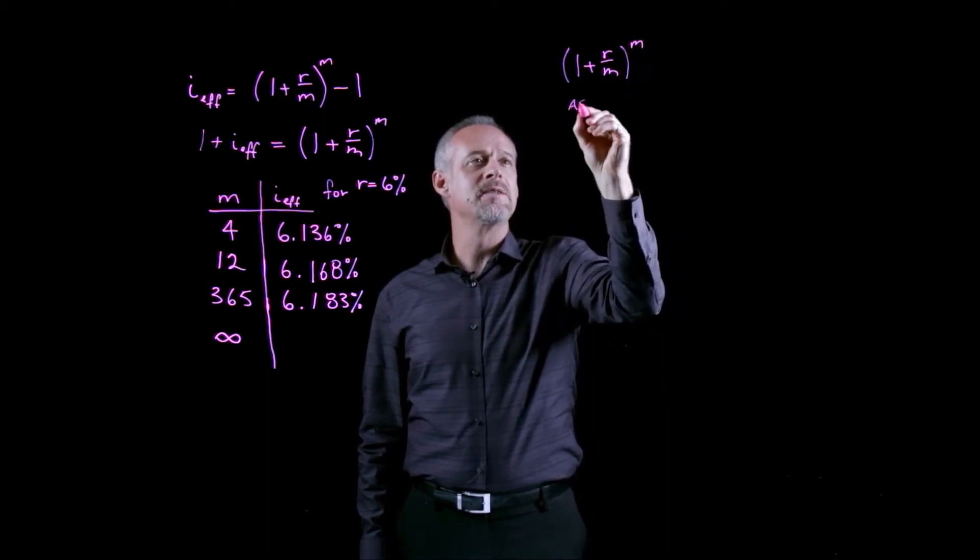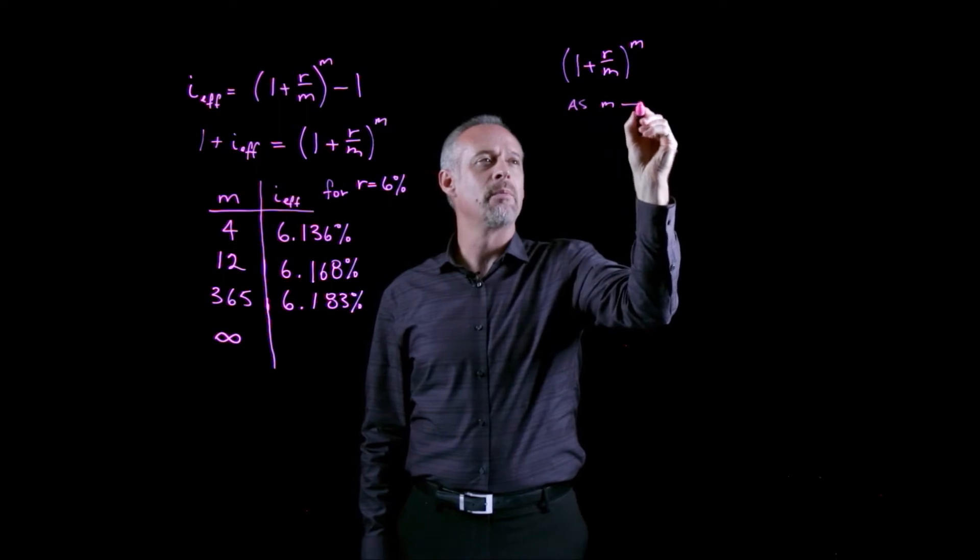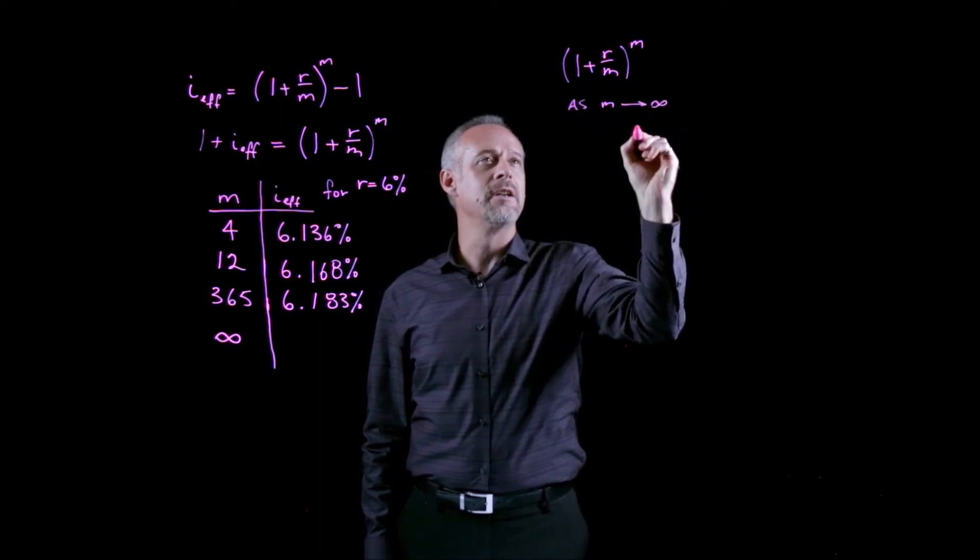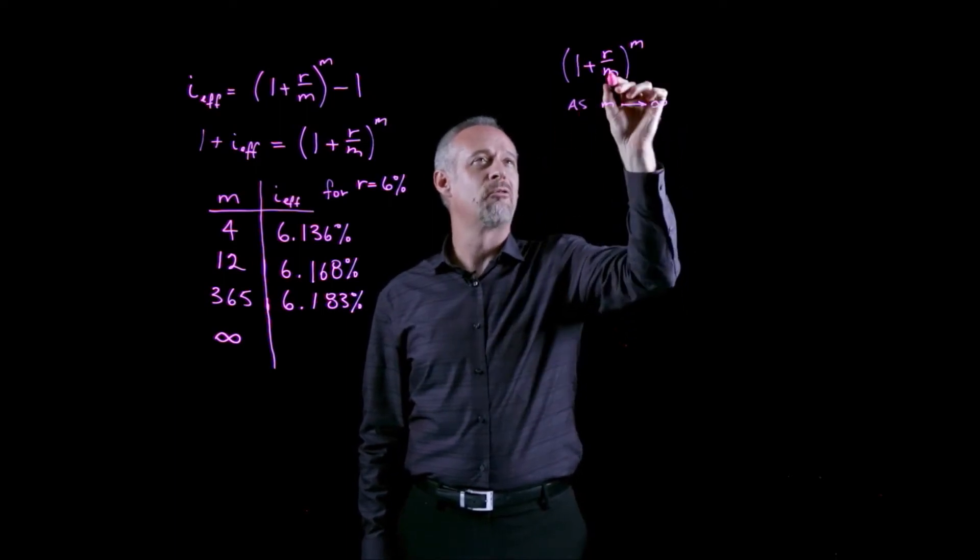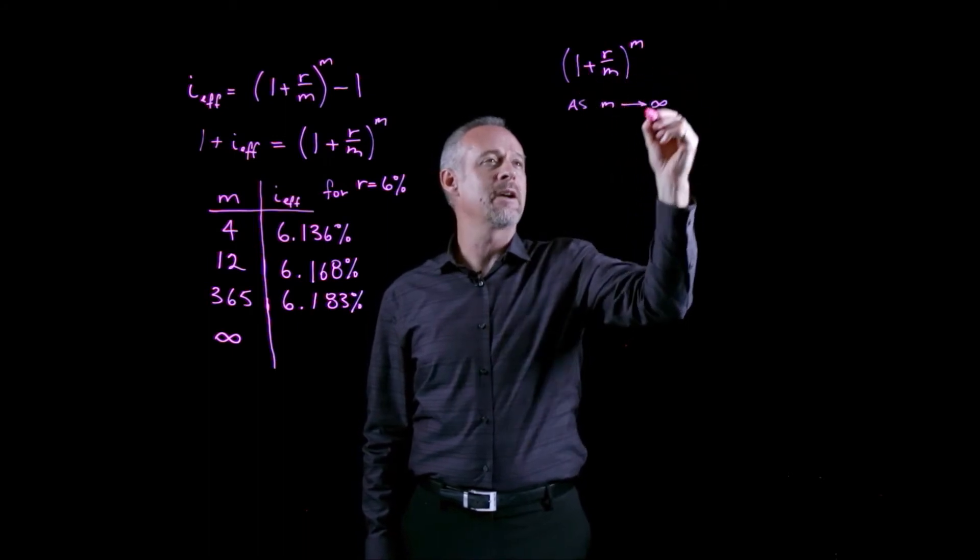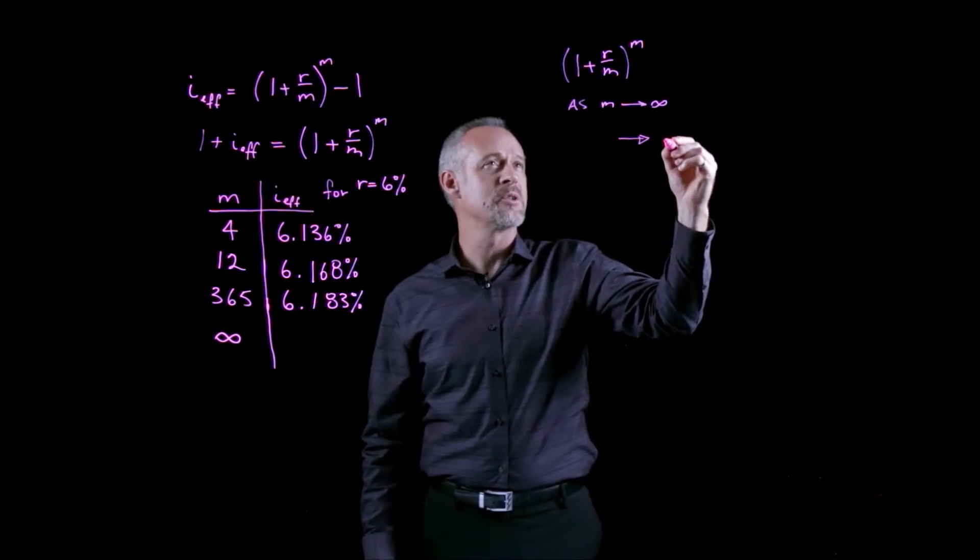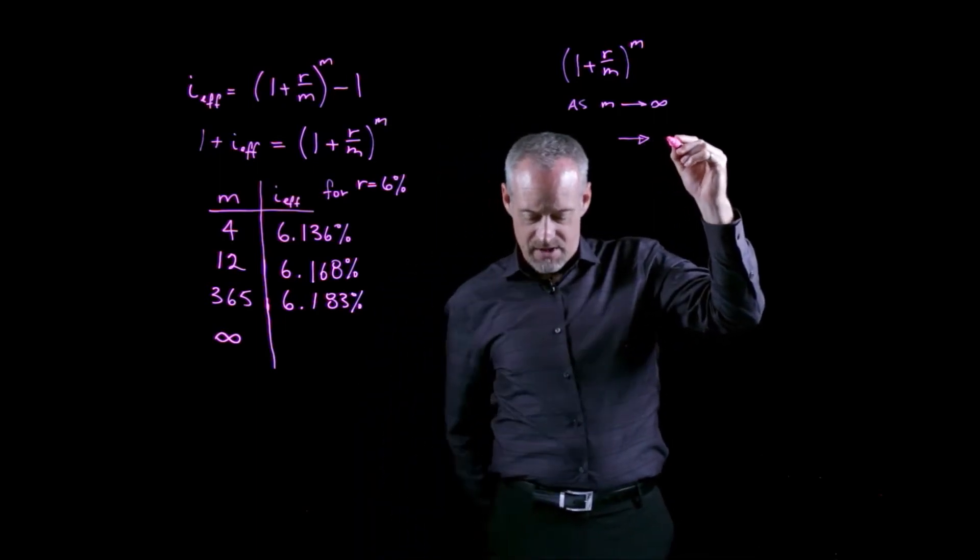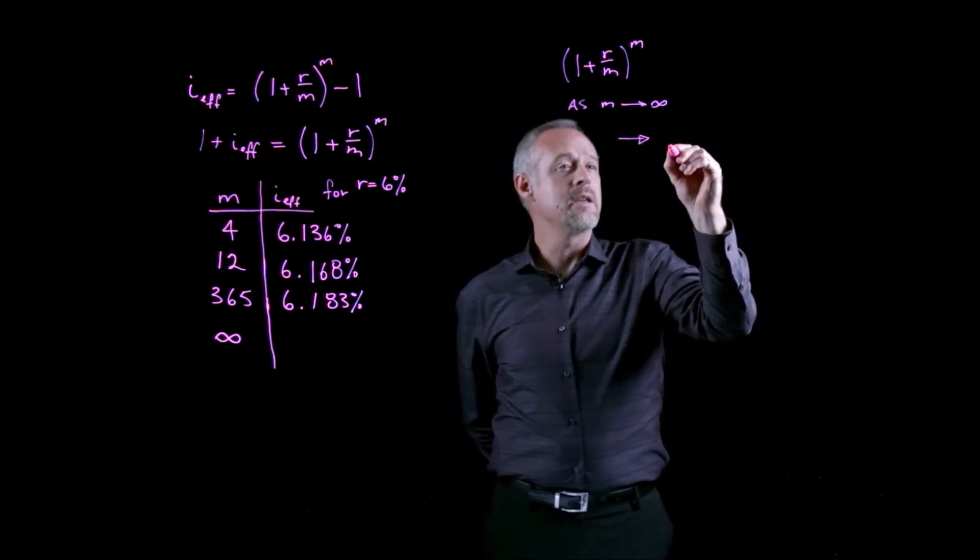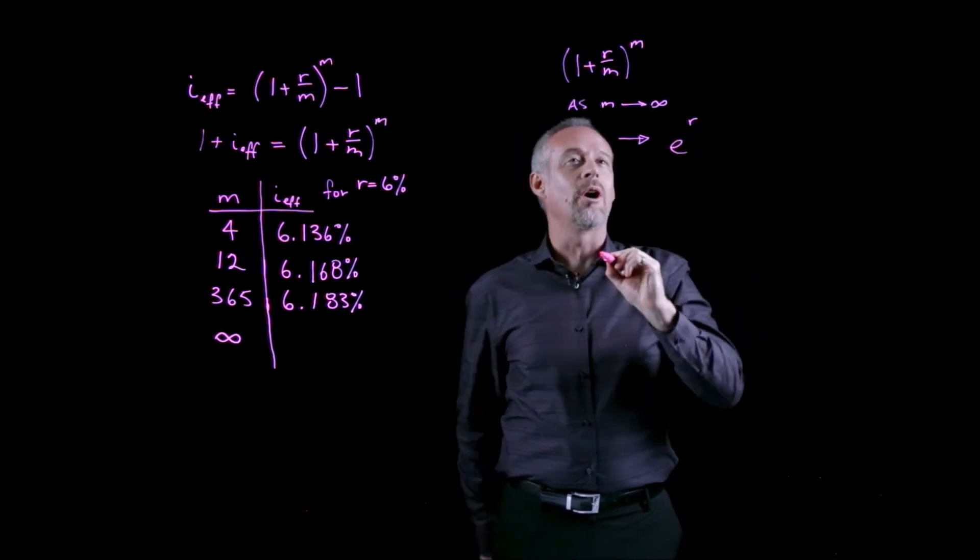If we say, as m approaches infinity, this formula, 1 plus r over m to the m, actually becomes e to the r.